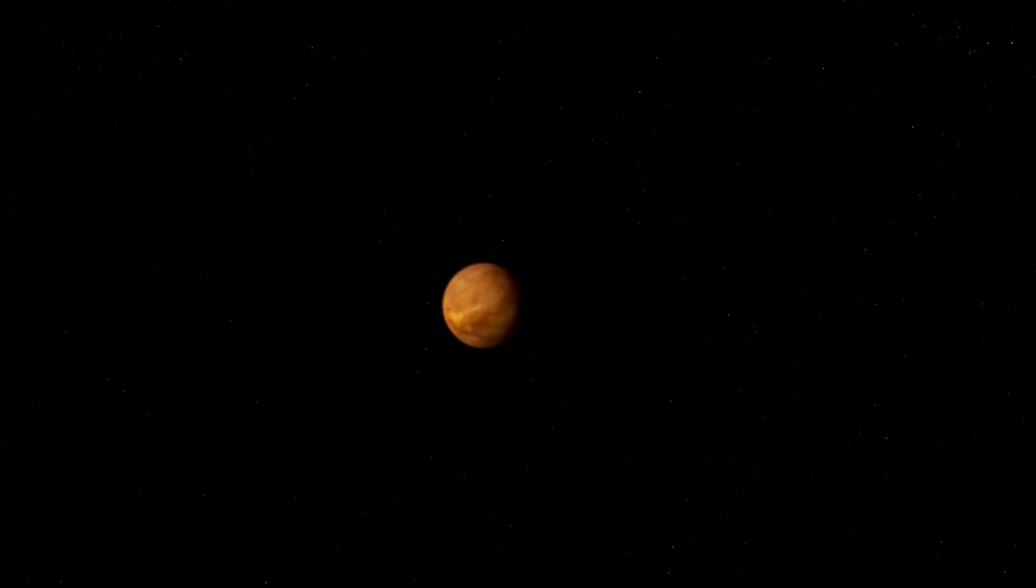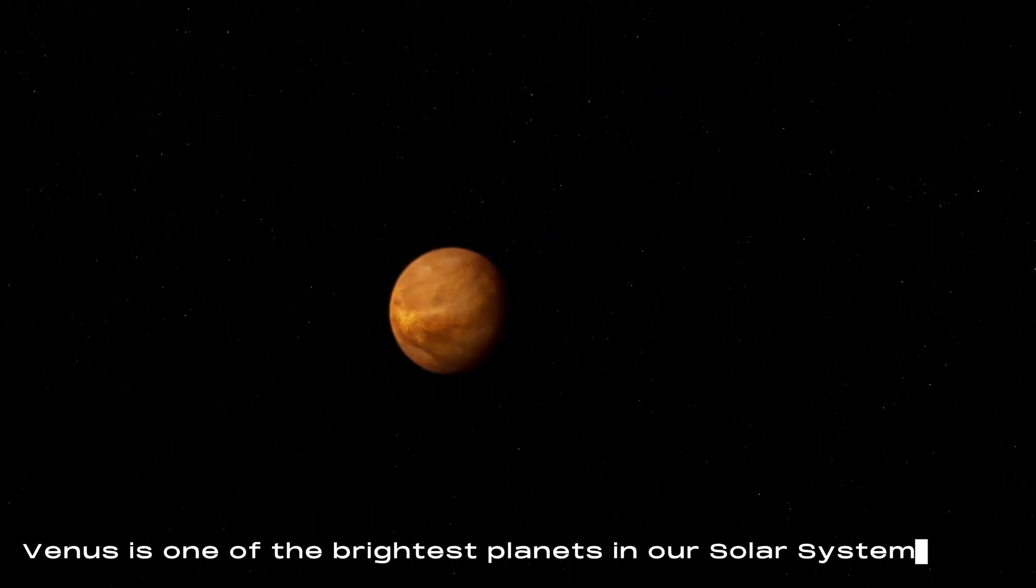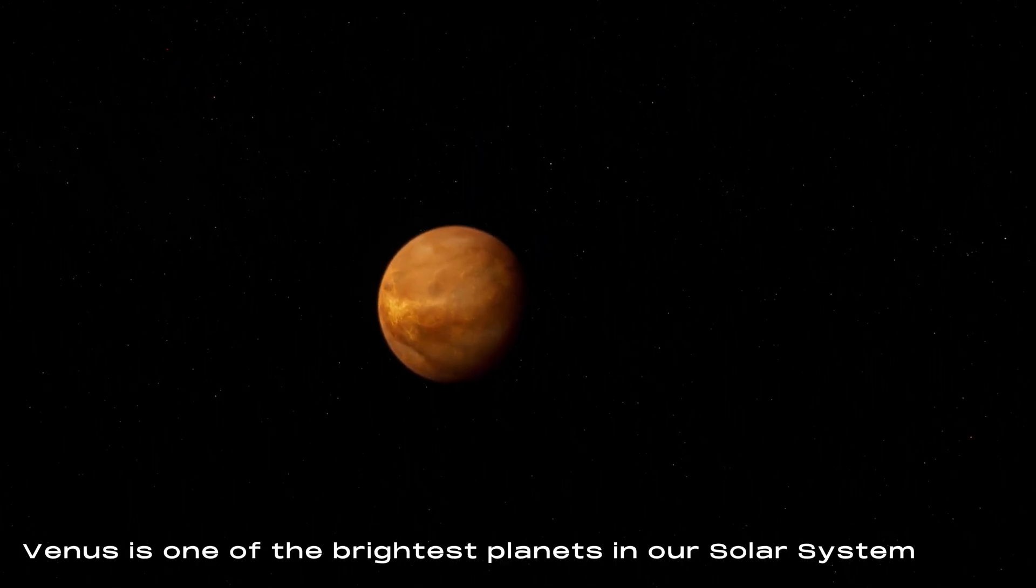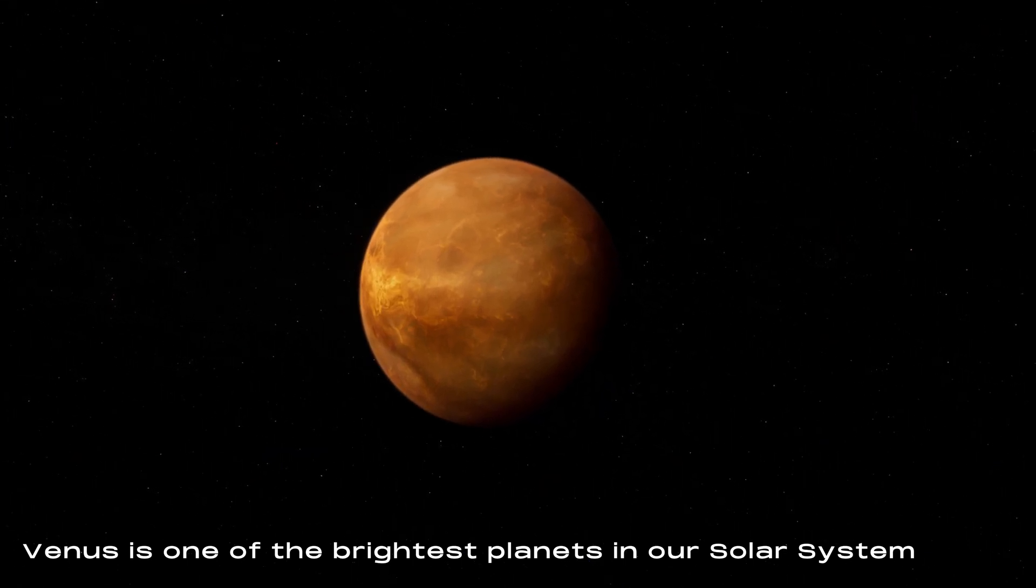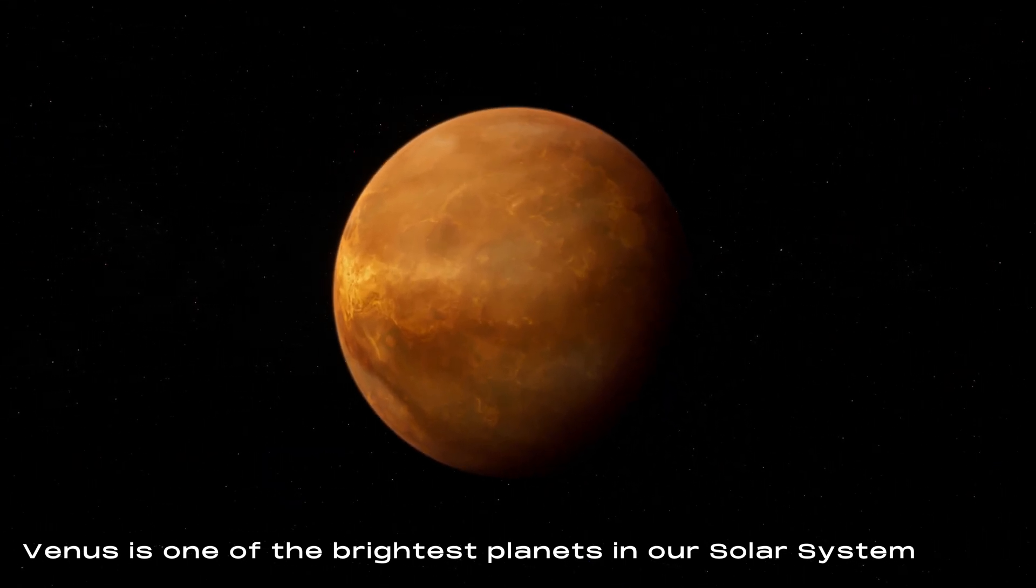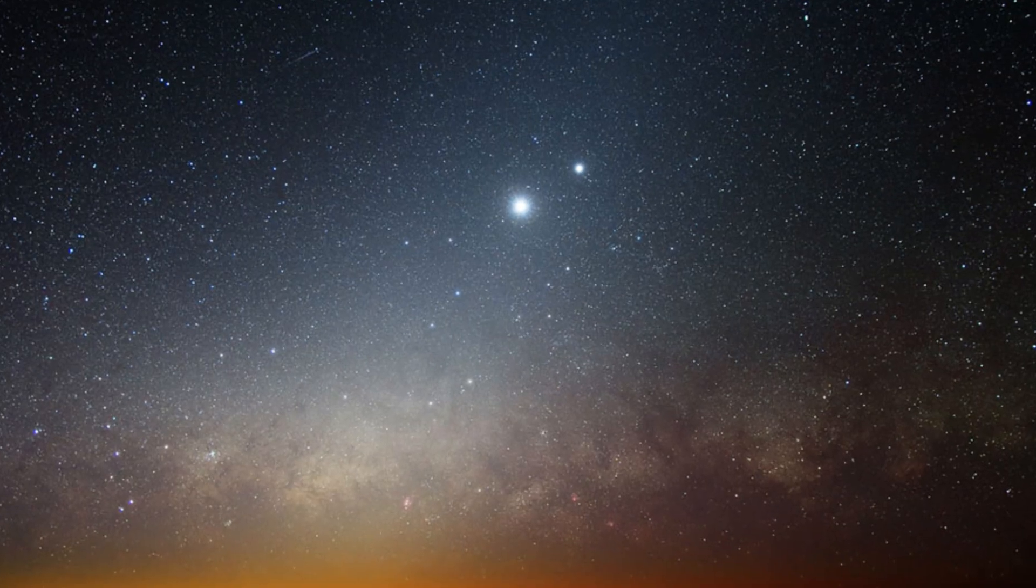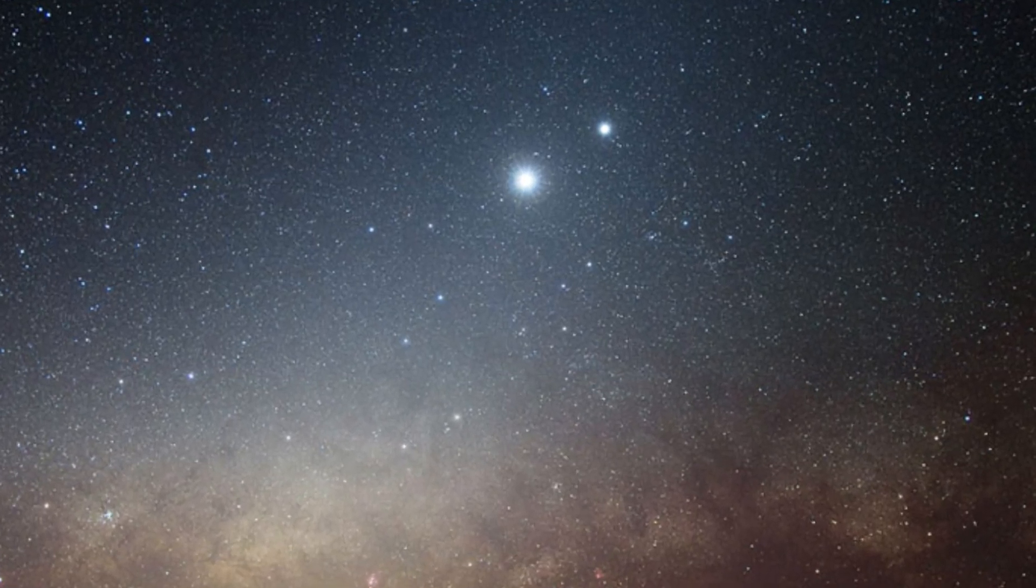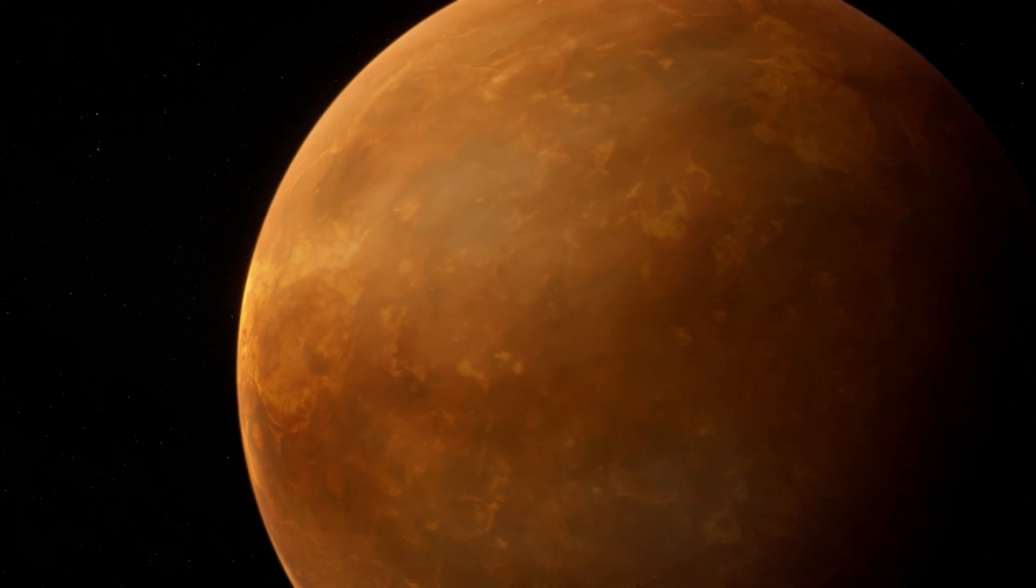As we know, Venus is not a good contestant for a habitable world yet, but because of this unforgiving environment, its brilliance makes it a striking and easily recognizable object in the sky. Its brightness can even cast shadows on a dark night and is often bright enough to be seen during daylight if one knows where to look, sometimes referred to as the morning star.